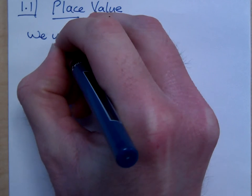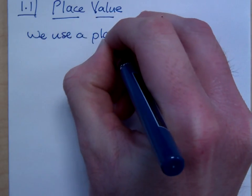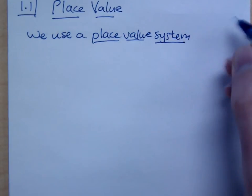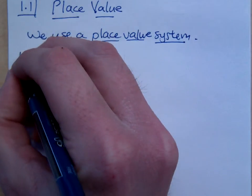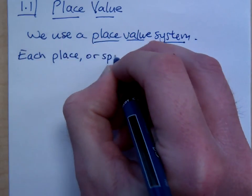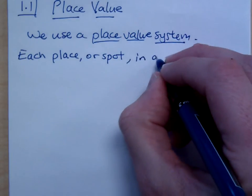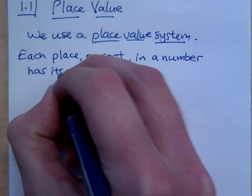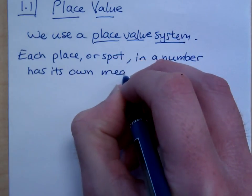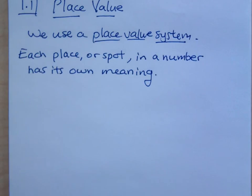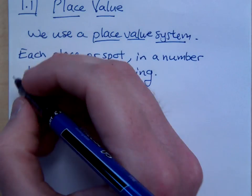Remember that in our numbering system, we use a place value system. When we say we use a place value system, what we mean by this is that each place or each spot in a number has its own meaning. So that any number that I write, we should all be able to read it the exact same way.